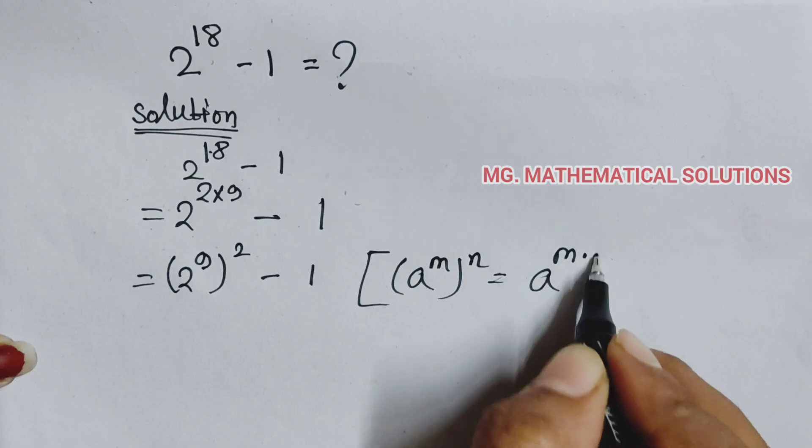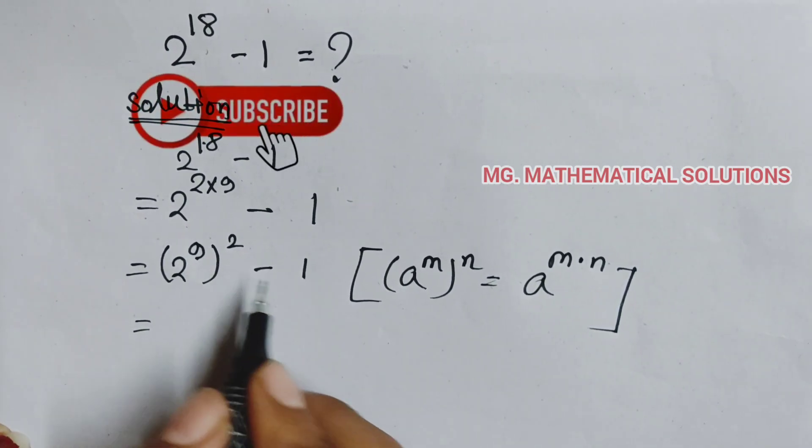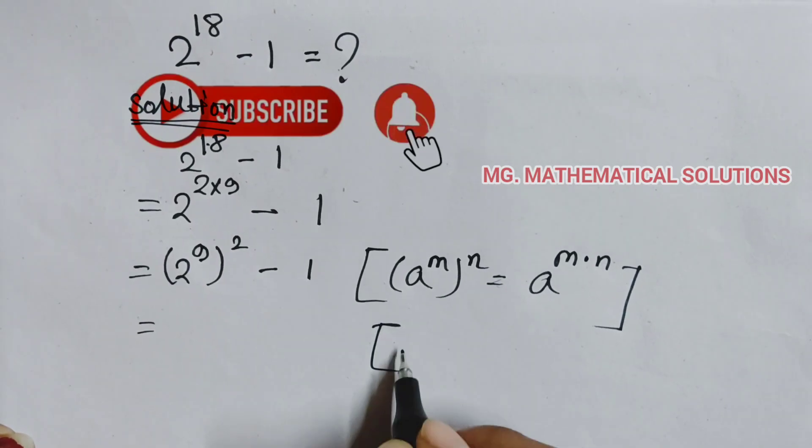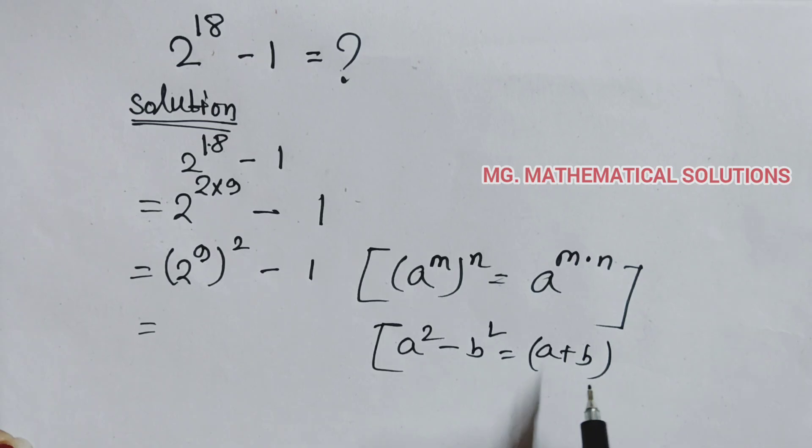Now we use the formula a square minus b square. A square minus b square formula: a square minus b square equal to a plus b into a minus b.